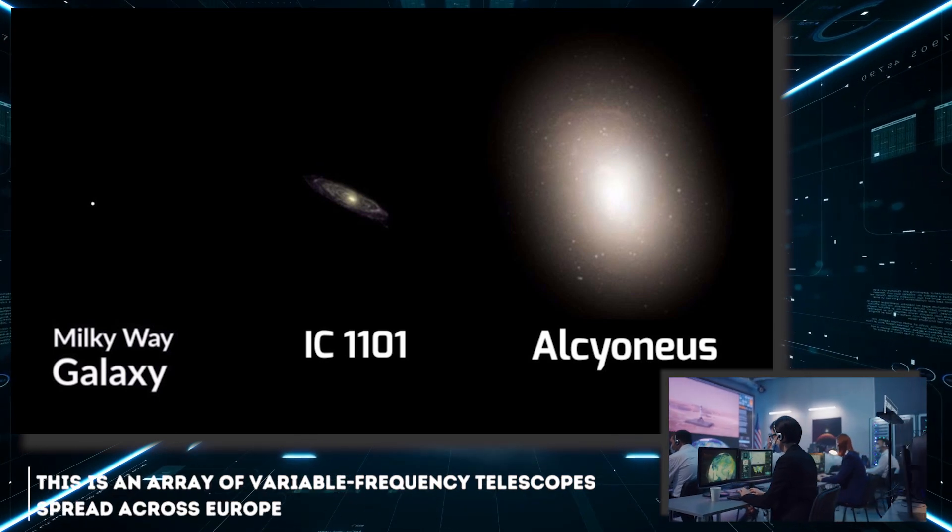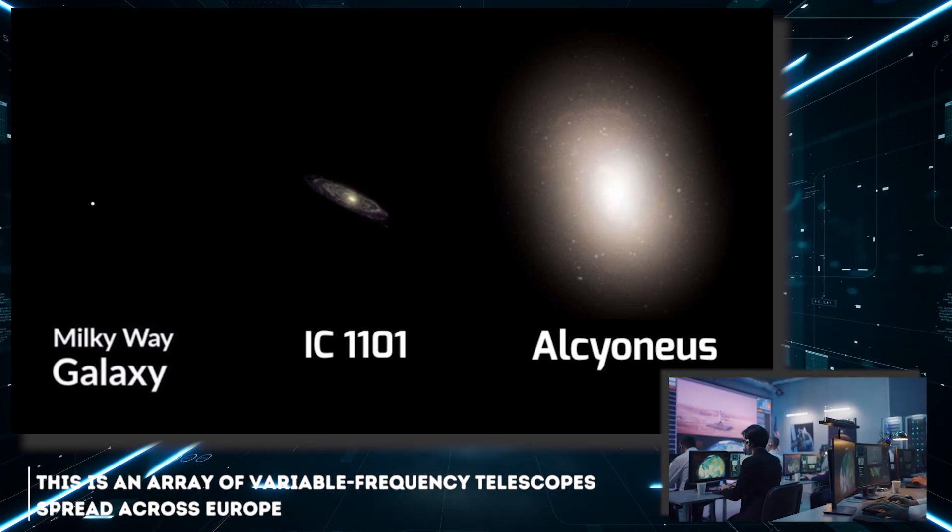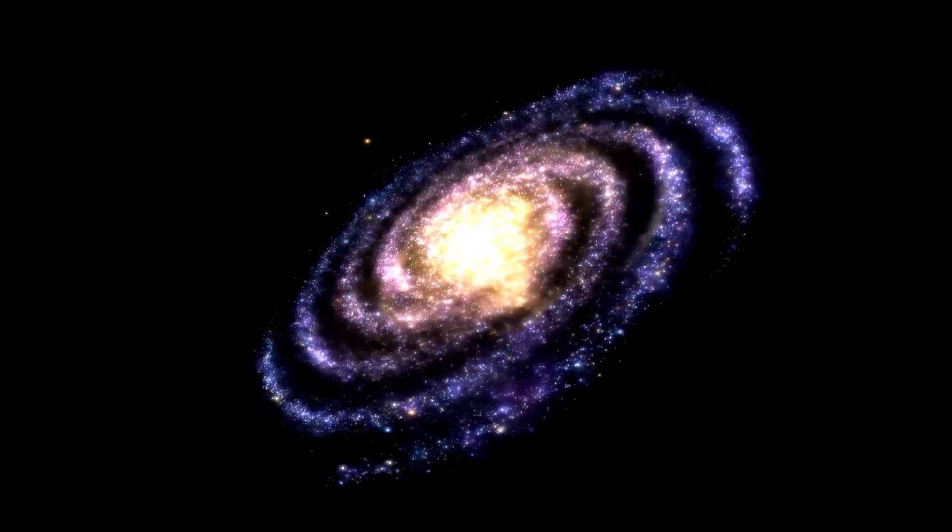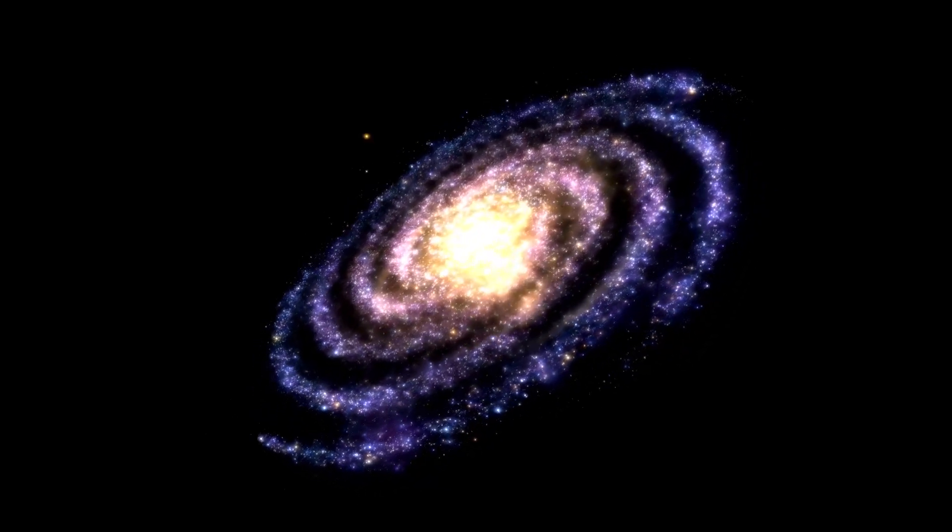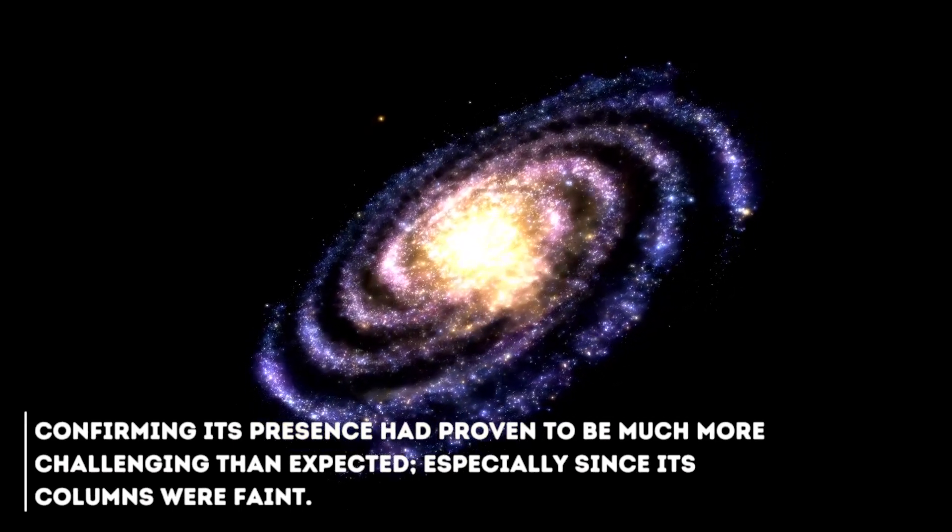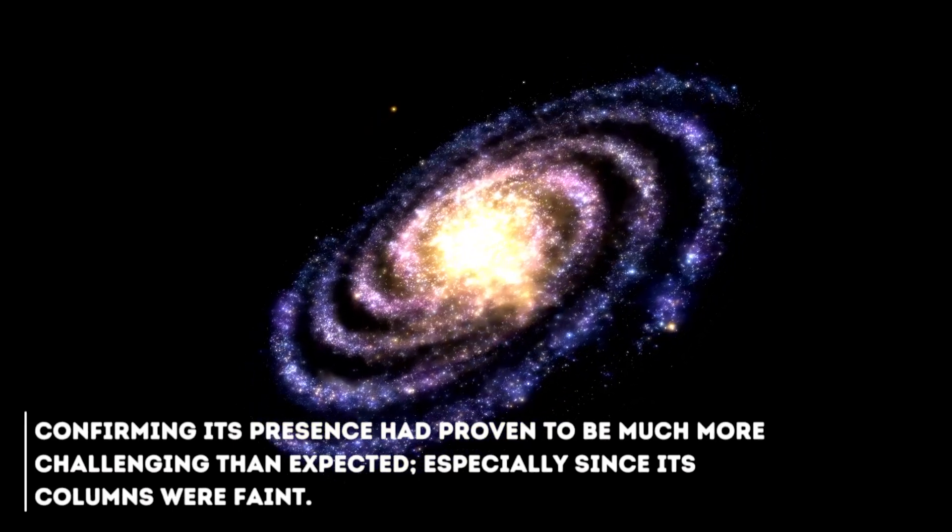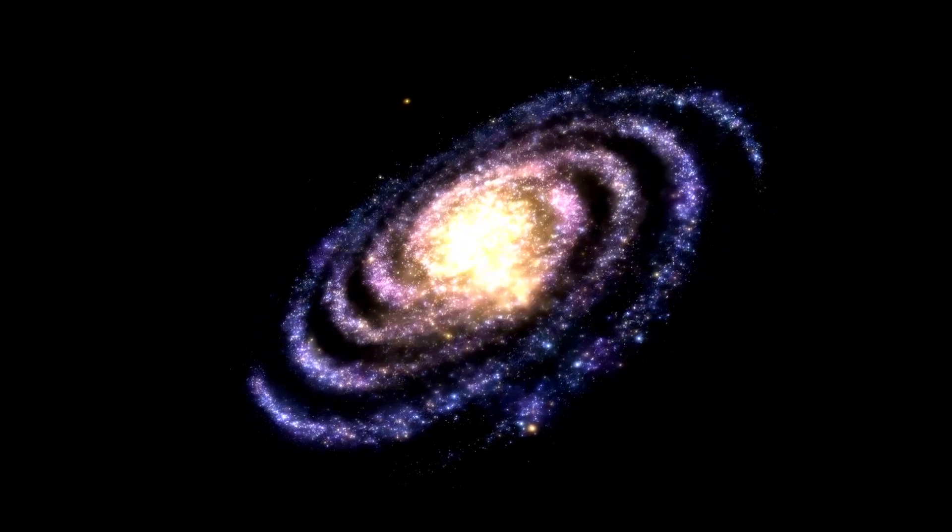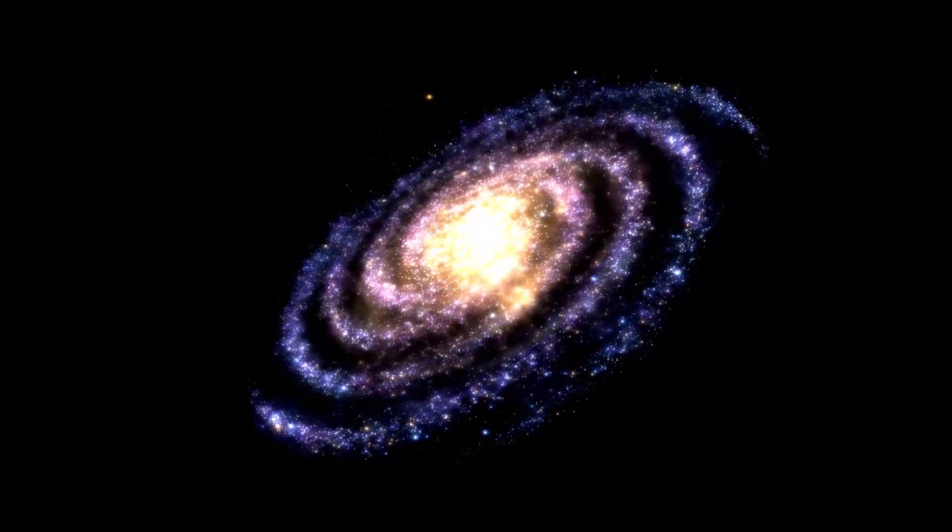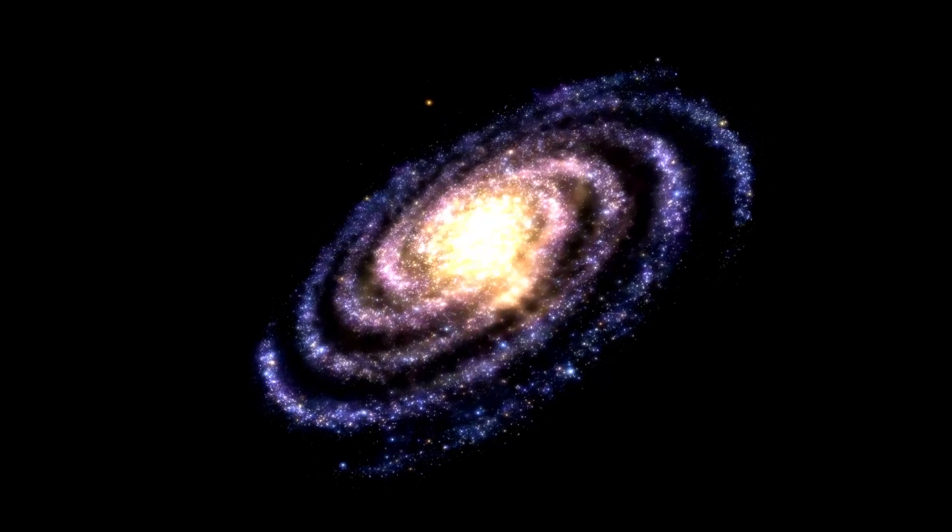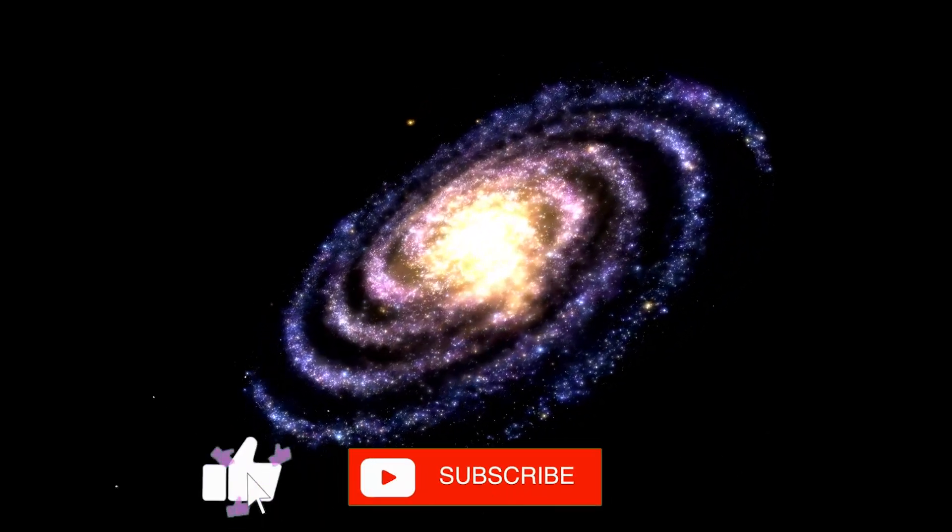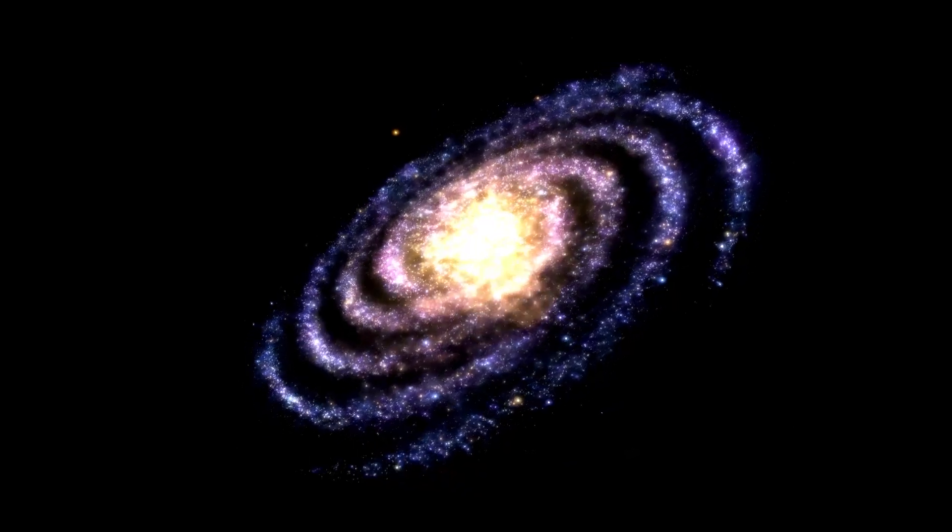This is an array of variable frequency telescopes spread across Europe. Although the existence of Alcinean had been suspected for some time, confirming its presence had proven to be much more challenging than expected, especially since its columns were faint. However, years of observation facilitated its discovery, as scientists reprocessed all the information they had about the galaxy, discovering new and interesting patterns that eventually formed the final pieces to find Alcineas.